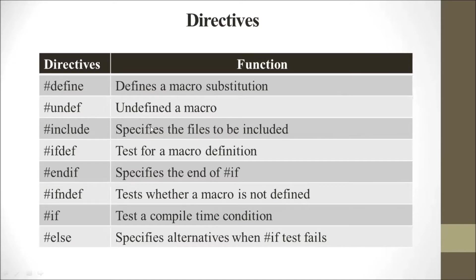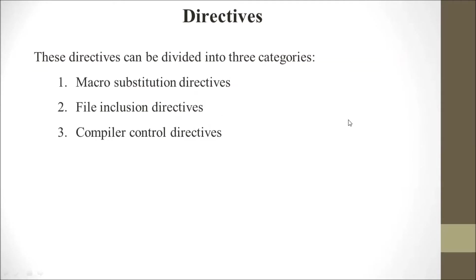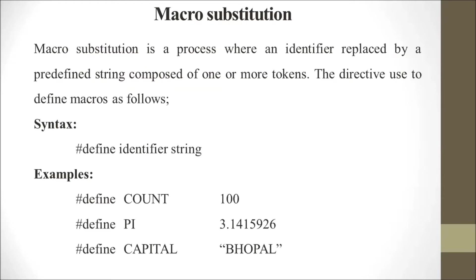Directives can be divided into three categories: macro substitution (first category), file inclusion (second category), and compile control (third category). Macro substitution is a process where an identifier is replaced by a redefined string composed of one or more tokens.